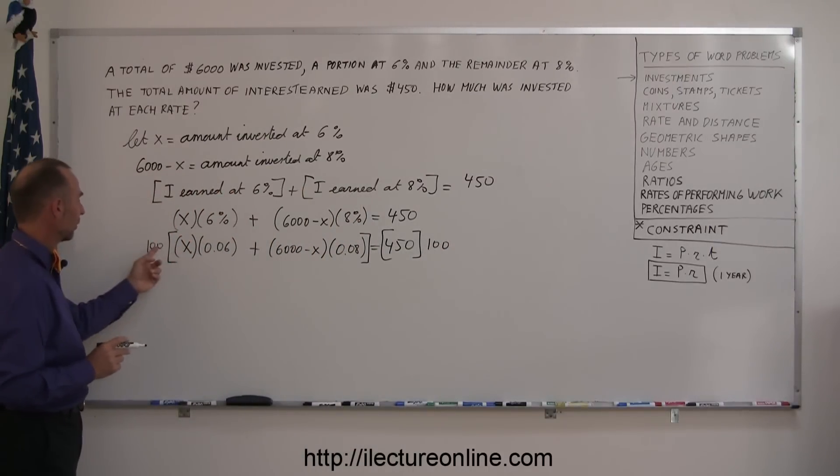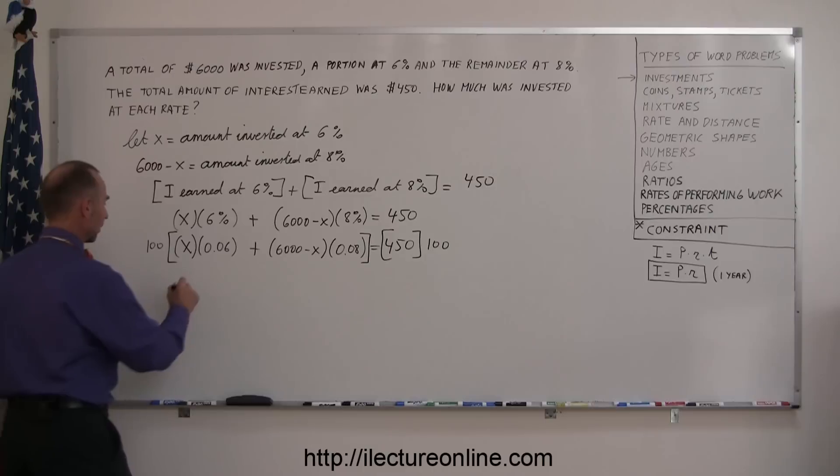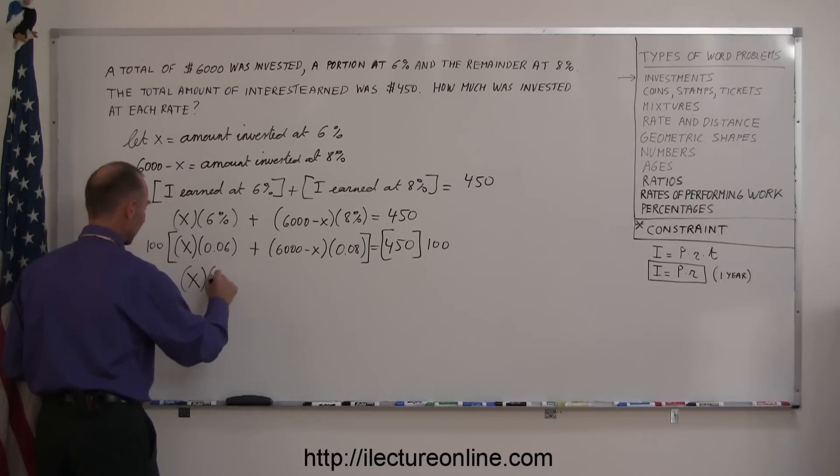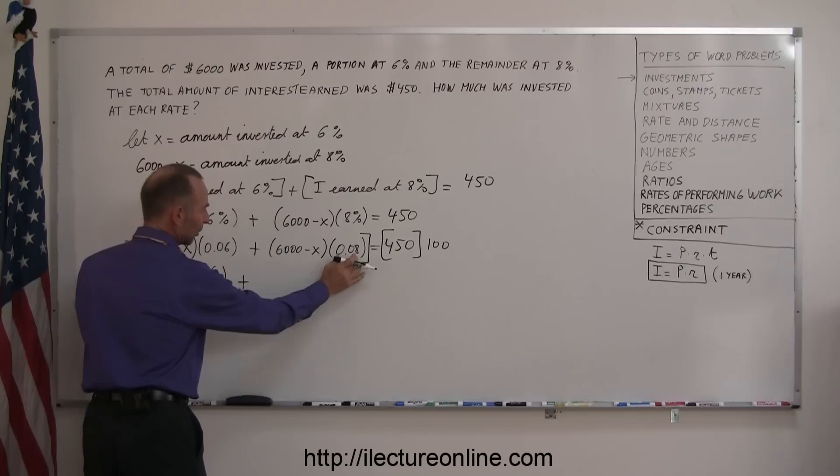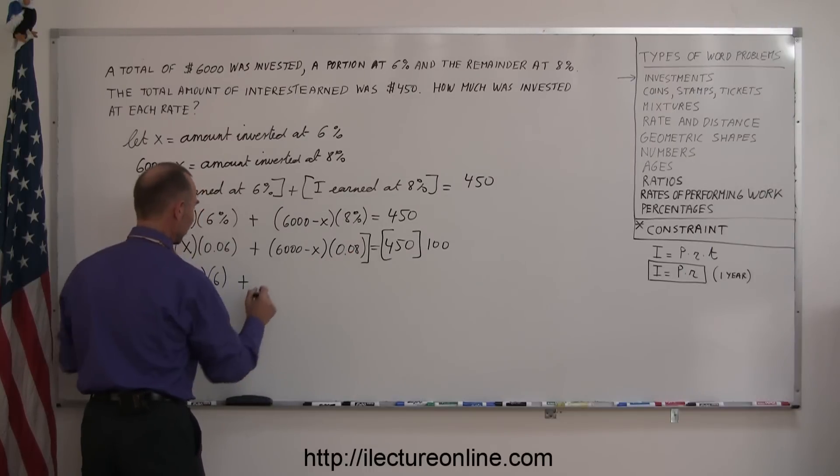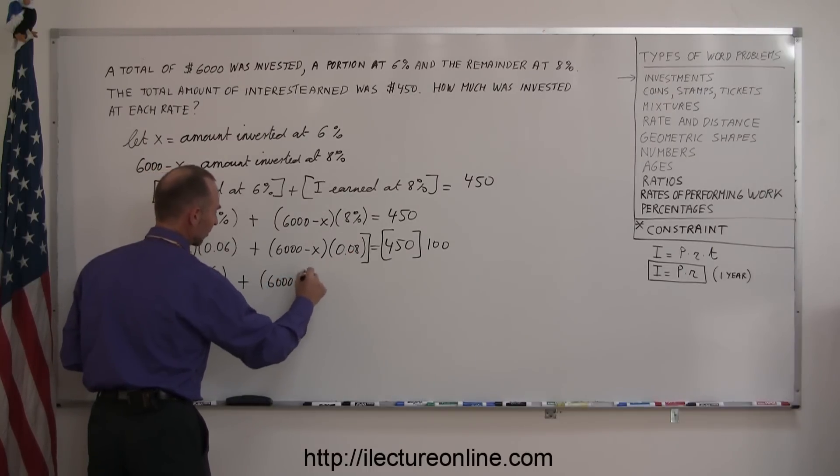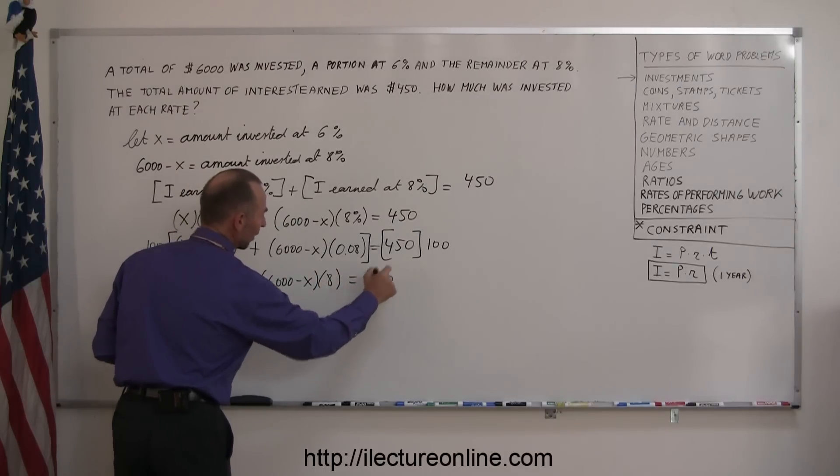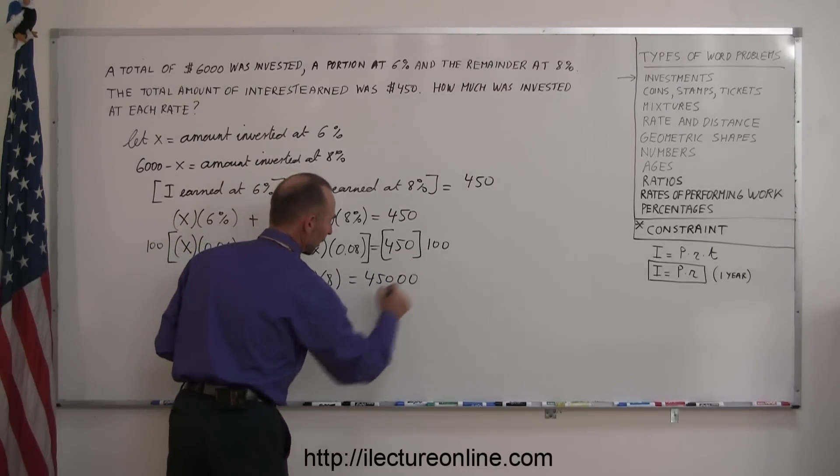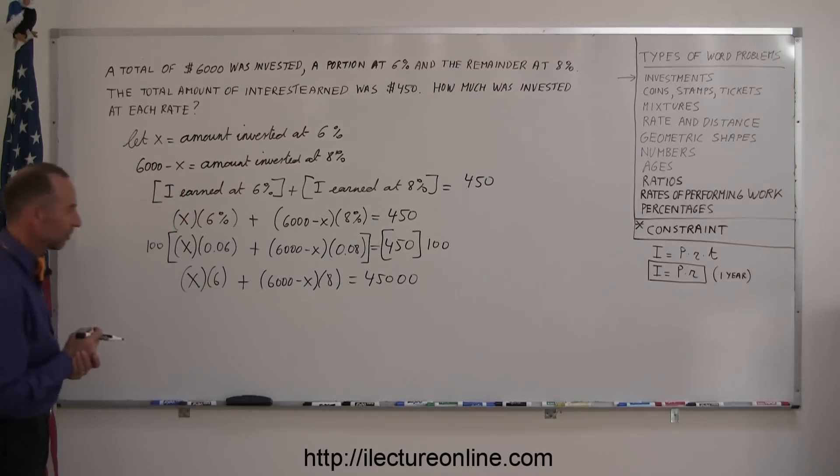Okay, 100 times this, well, 100 times 0.06 gives me 6, that's X times 6, plus 100 times this, when I multiply this, I get 8 instead of 0.08, so this gives me 6,000 minus X times 8, and that equals 450 with two more zeros, because now I'm multiplying that times 100, so I get 45,000.